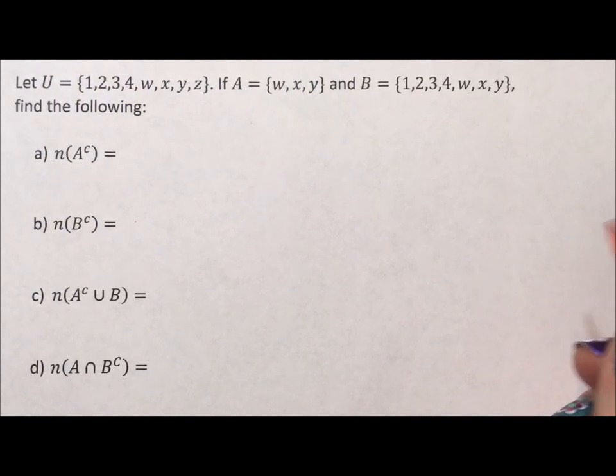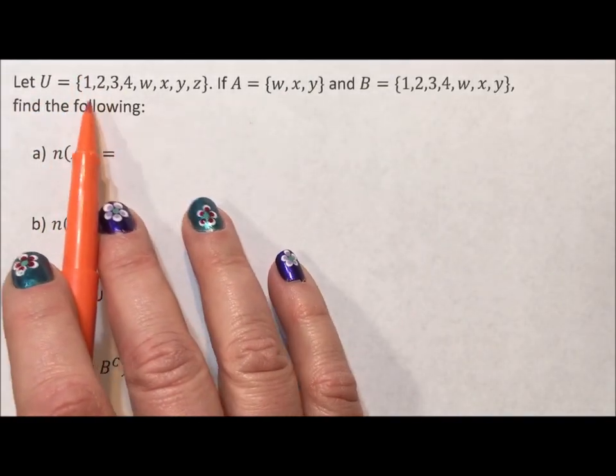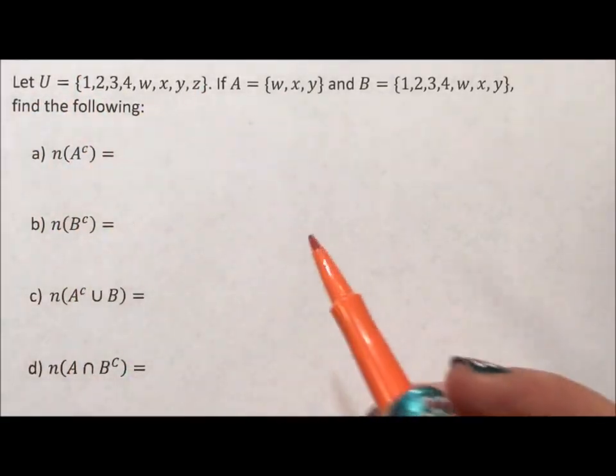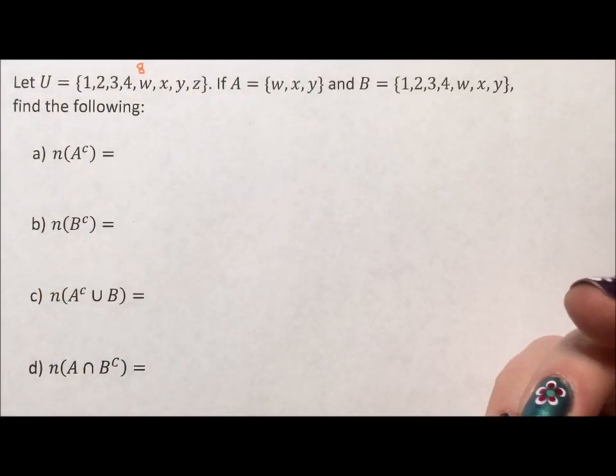In this video I have three sets. The first one is U, which stands for universe, and what this means is these are the only eight elements we're dealing with: 1, 2, 3, 4, W, X, Y, Z.